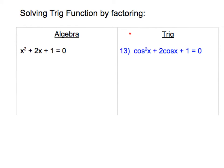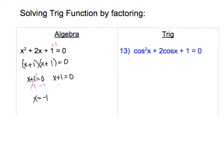Now we'll look at a different method for solving — factoring. I'll compare an algebra trinomial to a trig problem. The algebra problem has x squared, 2x, and plus 1. For a trinomial, try to factor: two numbers multiplying to give 1 are 1 and 1, and 1 plus 1 gives positive 2. So it factors as (x+1)(x+1), and setting each factor equal to 0 gives x equals negative 1 for both — a repeated solution.